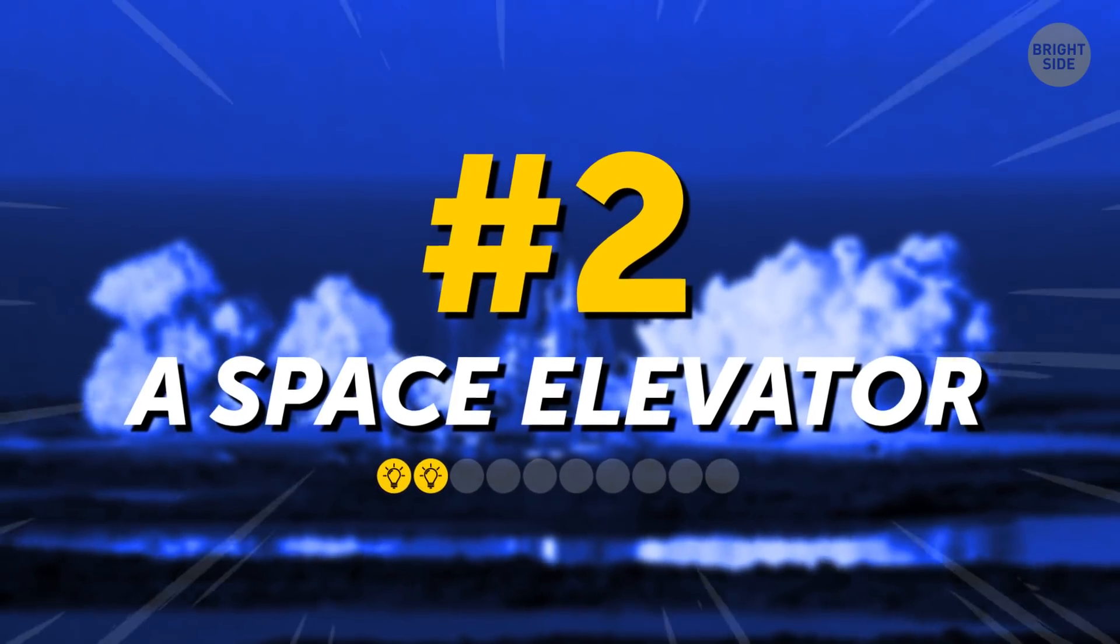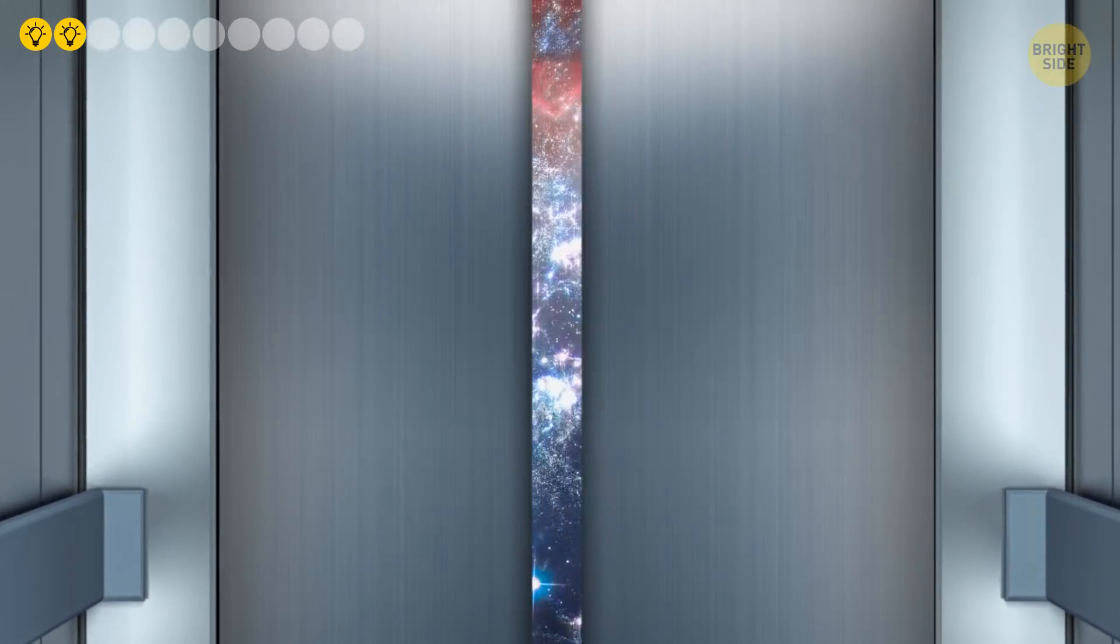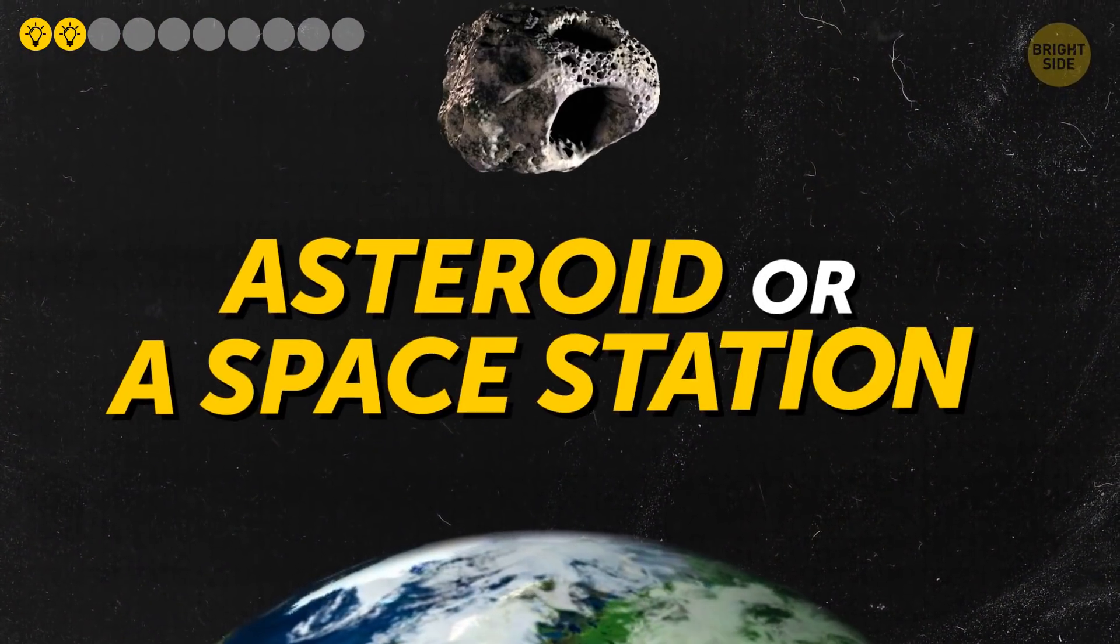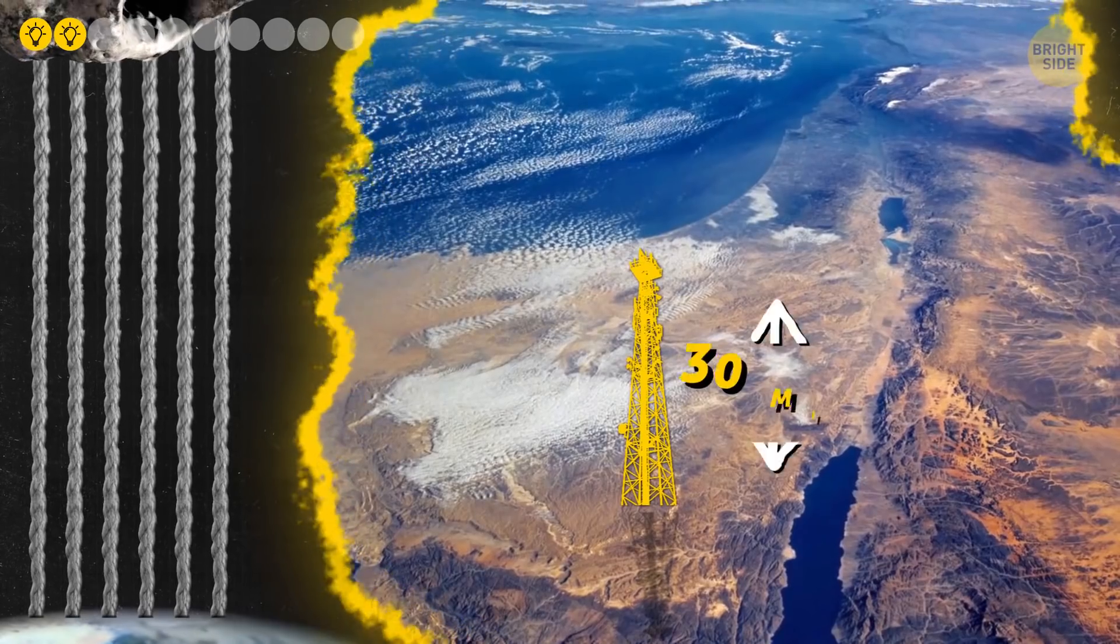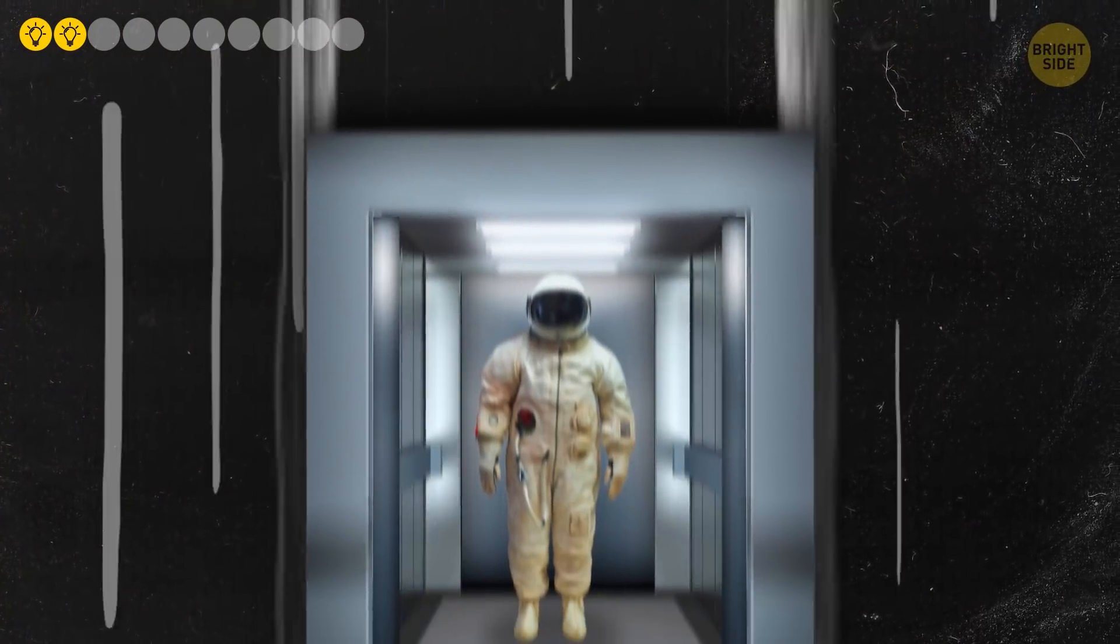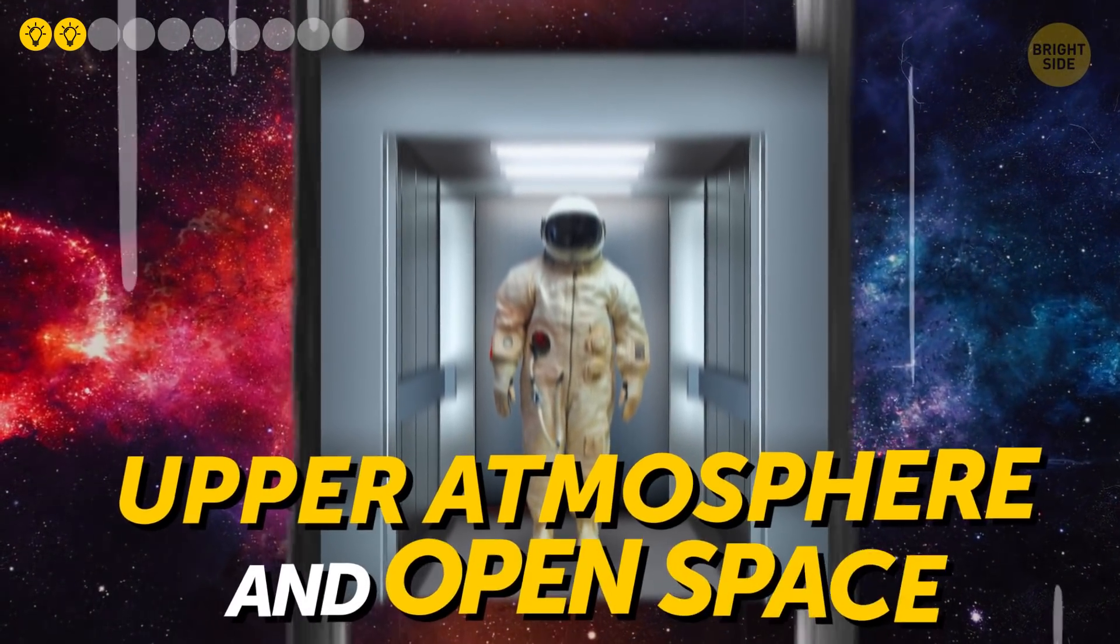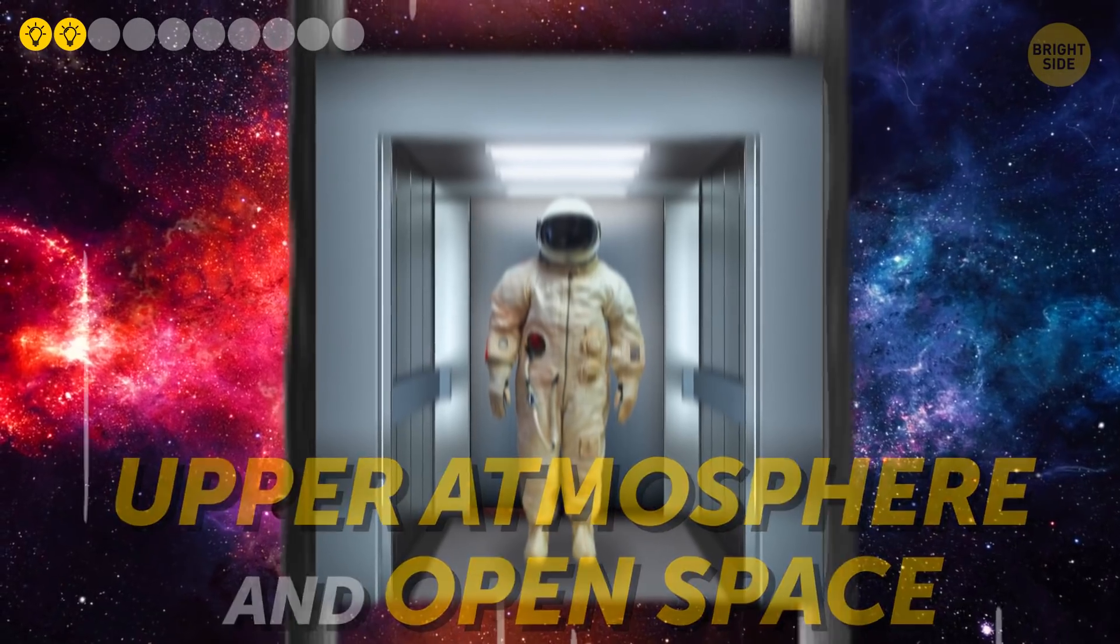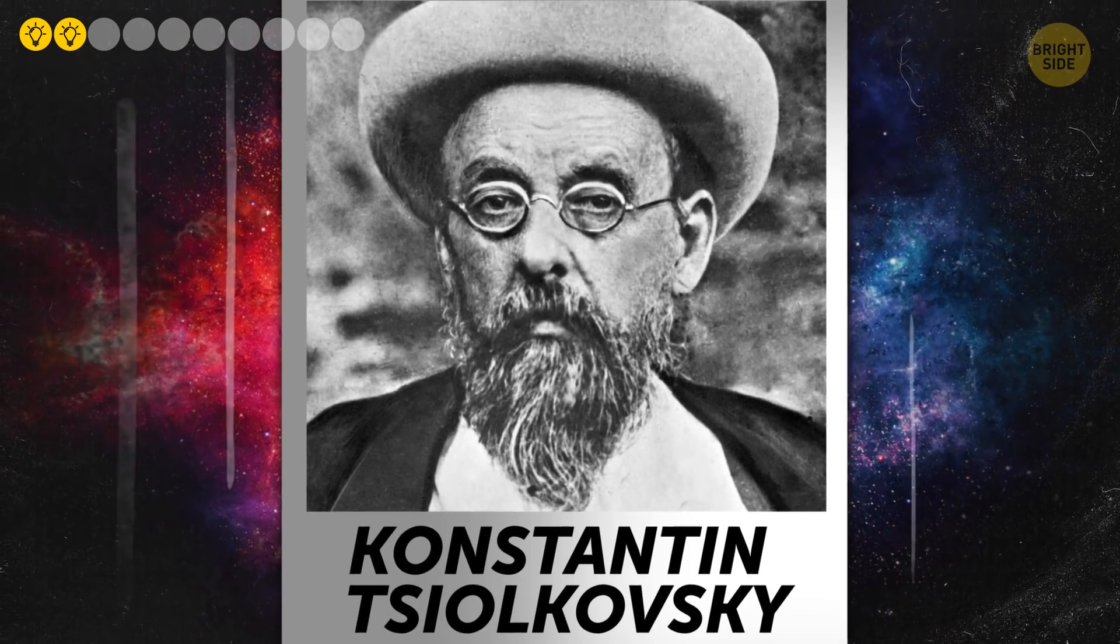A Space Elevator. Yep, I'm talking about a real elevator that's supposed to go all the way from Earth to space. It would be connected to an asteroid or a space station by 4 to 6 massive cables. The bottom ends of these cables would be fixed to a 30-mile-tall tower on the ground. The elevator itself would travel from platform to platform at speeds of thousands of miles per hour. These platforms would be located both in the upper atmosphere and in open space. But you know the most amazing thing about the space elevator? This idea actually appeared for the first time in 1895. It was a Russian scientist, Konstantin Tsiolkovsky, who suggested building such a construction.